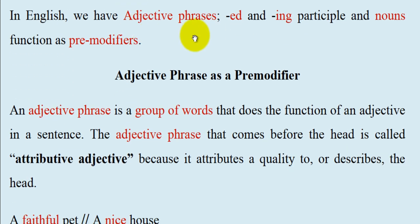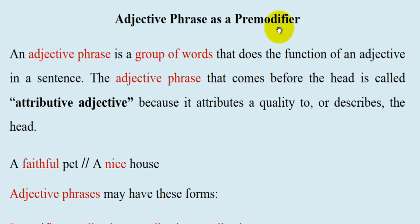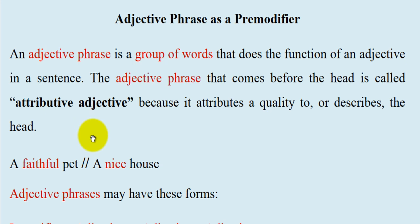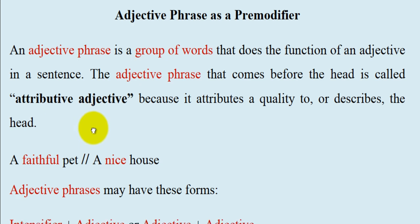In English, we have adjective phrases, -ed and -ing participles, and nouns that function as pre-modifiers. Let us first look at adjective phrases as pre-modifiers. An adjective phrase is a group of words that does the function of an adjective in a sentence. That means an adjective and an adjective phrase are the same concerning their function. The adjective phrase that comes before the head is called, linguistically speaking, an attributive adjective, because it attributes a quality to or describes the head. So these are the adjective phrases that come before the head noun in a sentence.